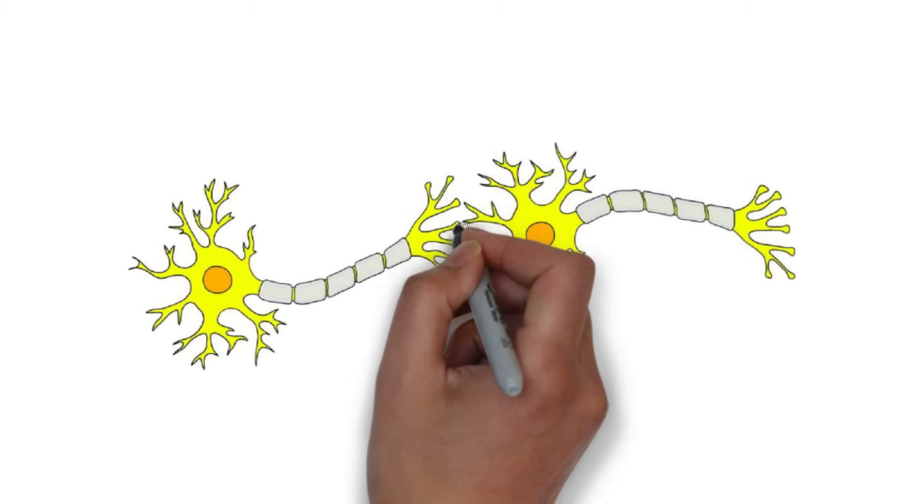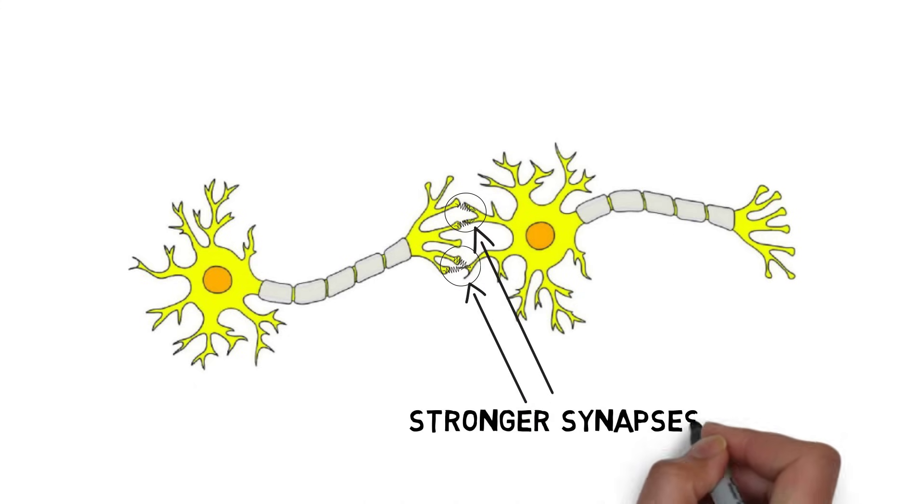Now the postsynaptic cell is more sensitive to glutamate because it has more receptors to respond to it. Additionally, there are thought to be signals that travel back across the synapse to stimulate greater levels of glutamate release. All this makes the synapse stronger and more likely to be activated in the future.